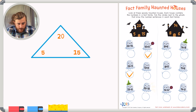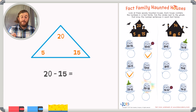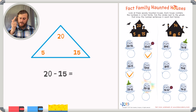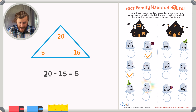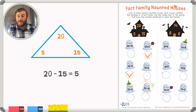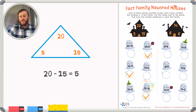And finally, we have 20 minus 15. If I count up from 15 to 20: 15, 16, 17, 18, 19, 20 — I have an answer of 5. And those three numbers — 5, 15, and 20 — all belong in my fact family. So 20 minus 15 is an equation that belongs inside my fact family.